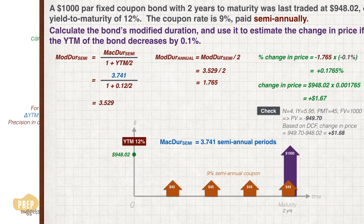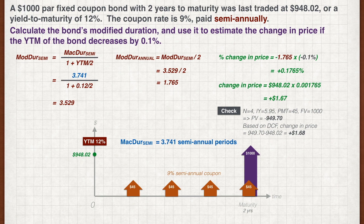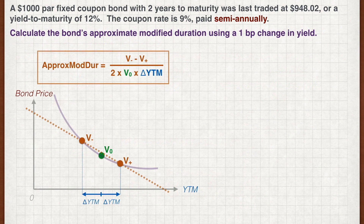Let's go back to our last example from the previous lesson and calculate the approximate modified duration of the bond. Recall that we calculated the annual modified duration as 1.765, derived from the Macaulay duration — which was a tedious process of calculating the weights of each cash flow. Let's see if the approximate modified duration can simplify the process. We use a one basis point change in yield to maturity for our calculations. Our first step is to calculate V naught at 12% yield to maturity. Although we are already given the price of the bond at this yield, we need higher precision for our calculations as the change in yield is very small.